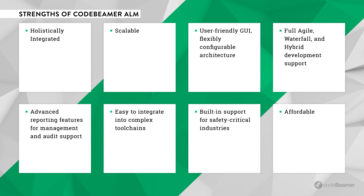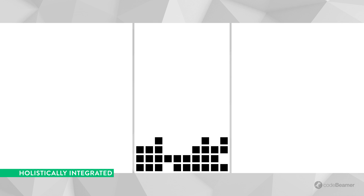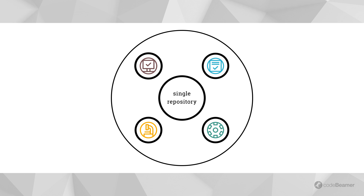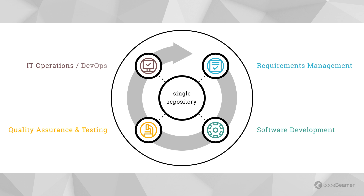Most ALM platforms that claim to be integrated are actually just stand-alone software modules glued together. Codebeamer, on the other hand, was built fully integrated from the ground up. All your lifecycle data is stored in a central repository. This means gapless traceability, automatically recorded audit trails, and fully documented change control on all your work items.